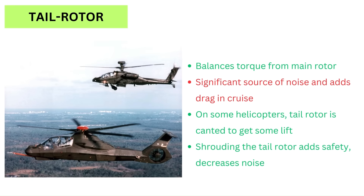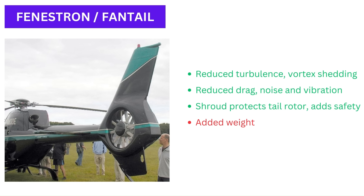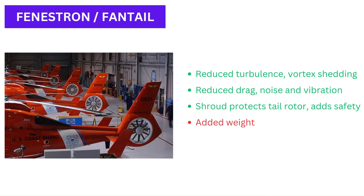Shrouding the tail rotor adds safety, as people on the ground won't accidentally walk into it. A shroud also reduces noise and radar cross-section. A conventional tail rotor seldom has more than four blades, while a typical fenestron includes eight to thirteen blades. Compared to conventional tail rotor blades, the fenestron blades are much smaller and spin at higher speeds. The primary advantage of this ducted fan arrangement is to reduce turbulence and vortex shedding, making the rotor more aerodynamically efficient by reducing drag, noise, and vibration.